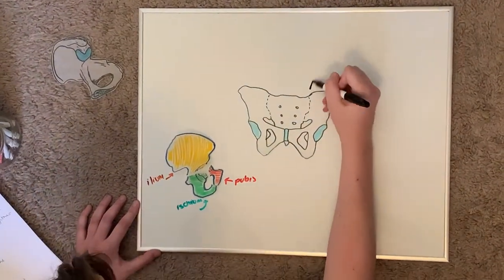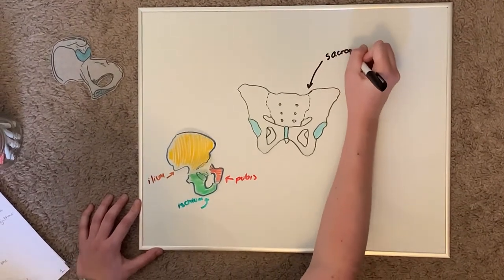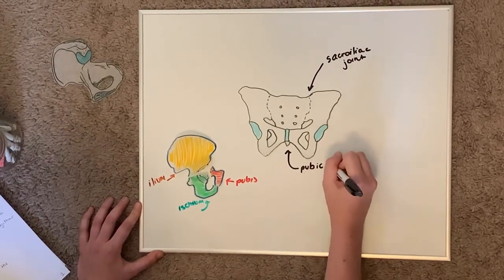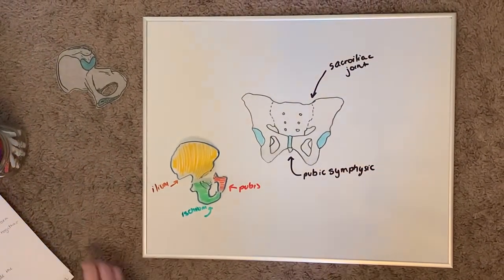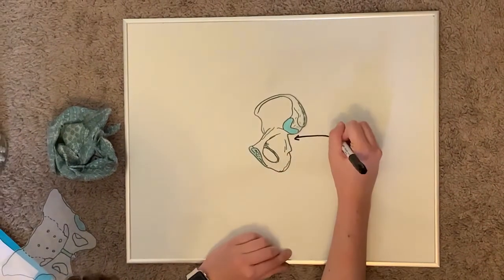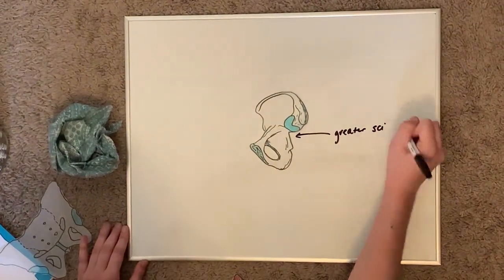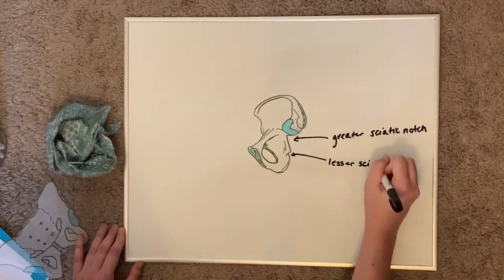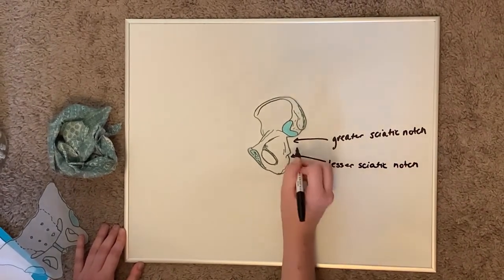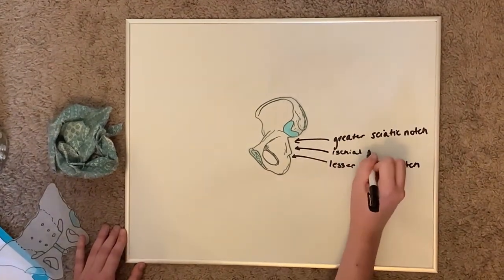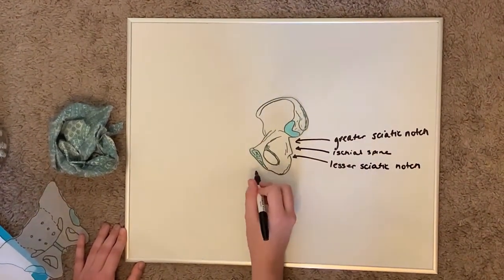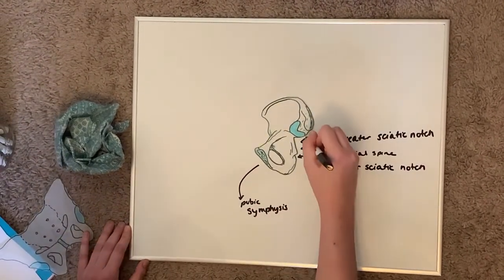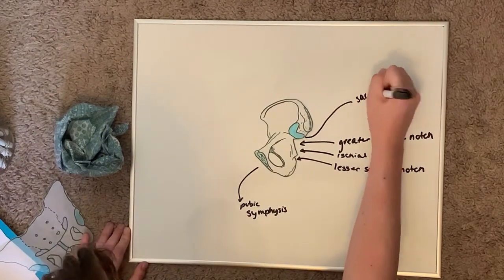The joints of the pelvis include the sacroiliac joint, intervertebral disc, and the pubic symphysis. Now let's go over some osteology landmarks. On the os coxa, the greater sciatic notch and the lesser sciatic notch are divided by the ischial spine. In this medial view, we can see the sacroiliac joint and the pubic symphysis, as well as the obturator foramen and the ischiopubic ramus.